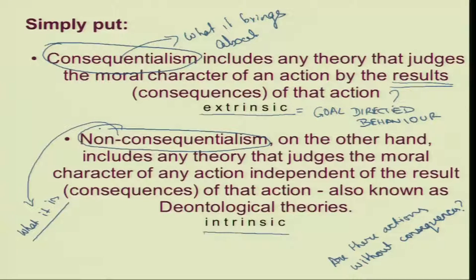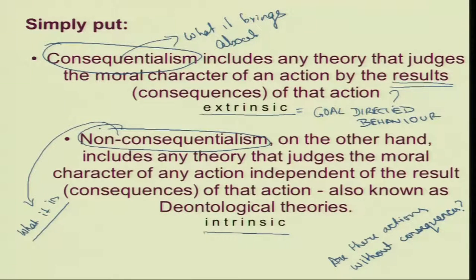Now, we have seen that Consequentialism, by itself, is not a theory. It is a domain under which the theories that judge the moral character of an action by the results or its consequences fall. So the kind of moral theories that use the consequence as the parameter are consequentialist theories. We have understood it as extrinsic, or the purpose of the action is extrinsic to the action — we have also understood it as goal-directed behaviour. Non-consequentialism, on the other hand, includes any theory that judges the moral character of an action independent of the consequences of that action.